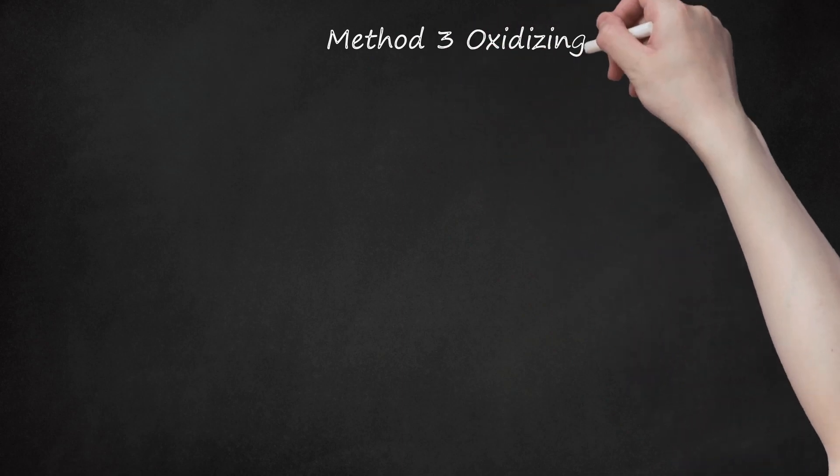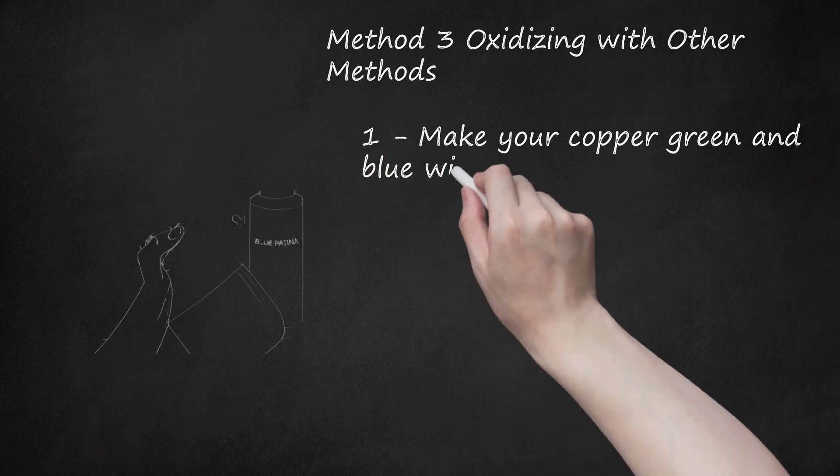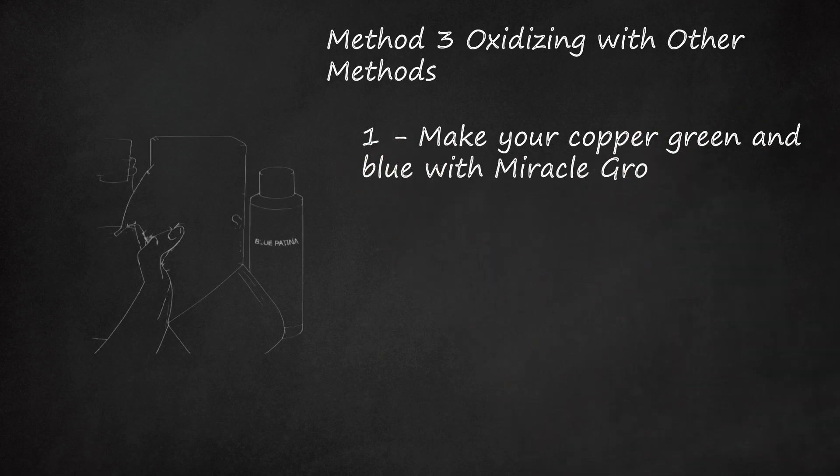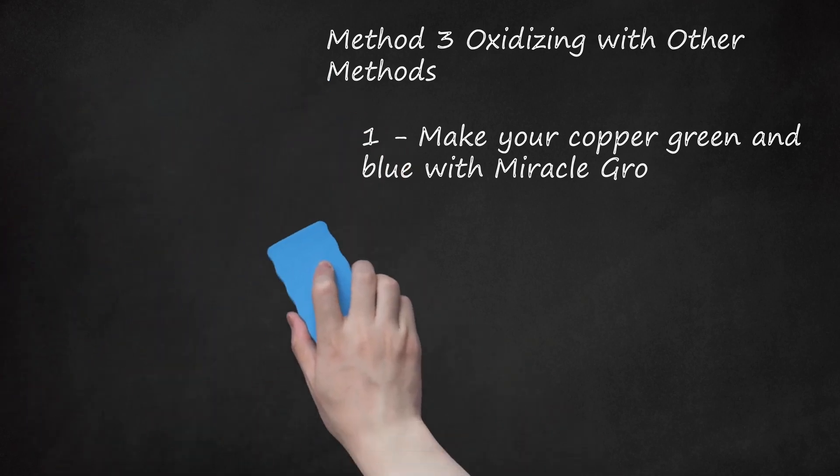Method 3: Oxidizing with other methods. Step 1: Make your copper green and blue with Miracle-Gro. You can use concentrated Miracle-Gro plant fertilizer to oxidize your copper quickly. Mix approximately 1 part Miracle-Gro with 3 parts water for a bluer patina or with red wine vinegar for a greener one. Apply with a spray bottle or rag, doing so unevenly if you want to create a more natural, aged appearance. It should develop a patina within 30 minutes and reach a more permanent state within 24 hours.